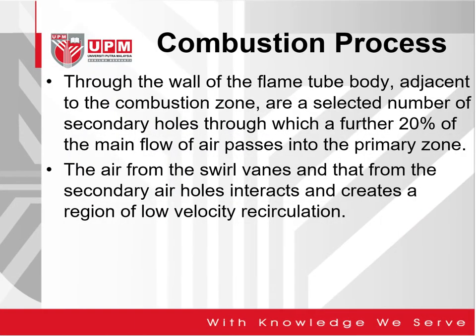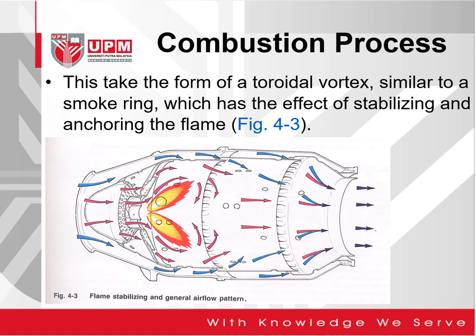Through the wall of the flame tube adjacent to the combustion chamber are a selected number of secondary holes, through which a further 20% of the main airflow passes into the primary zone. The air from the swirl vanes and from the secondary holes interact, creating a region of low velocity recirculation suitable for the combustion process. These take the form of a toroidal vortex — similar to a smoke ring — which stabilizes and anchors the flame.